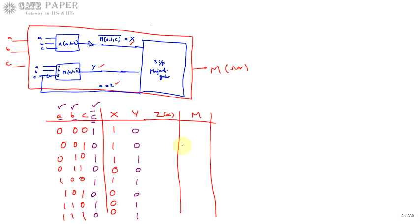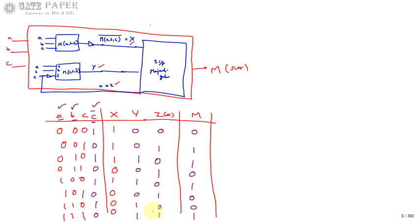Z is simply c = 0,1,0,1,0,1,0,1. Now x, y, z are inputs for the final three-input majority gate giving output m. For row 000: x=1,y=0,z=0 → one 1 → m=0. For row 001: x=1,y=0,z=1 → two 1s → m=1. For row 010: x=1,y=1,z=0 → two 1s → m=1. For row 011: x=0,y=0,z=1 → one 1 → m=0.